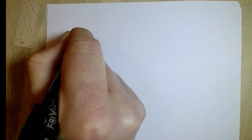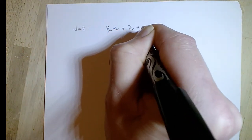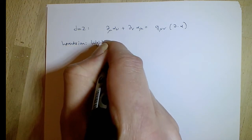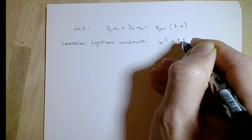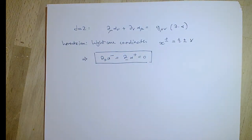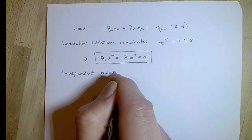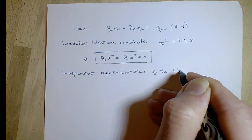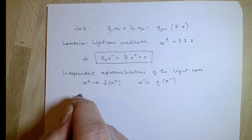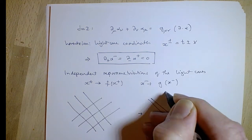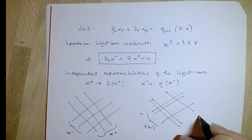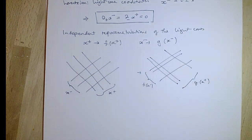Now in d equals 2, the only equation you get is the top equation. In lightcone coordinates it's simply that d_+ of alpha_- equals d_- of alpha_+ equals 0, so there are arbitrary functions: alpha_- an arbitrary function of x_-, alpha_+ an arbitrary function of x_+. What that means is you can re-parameterize your light cones by arbitrary functions f and g. A conformal structure is entirely encoded in the pattern of light rays, and they can just be moved around, giving two infinite-dimensional independent symmetries.